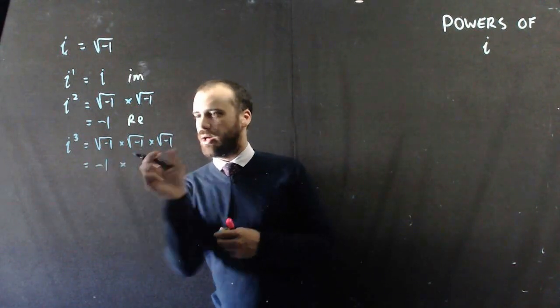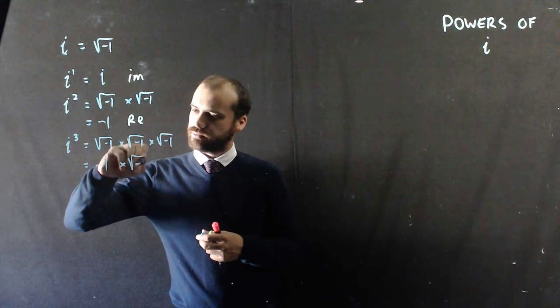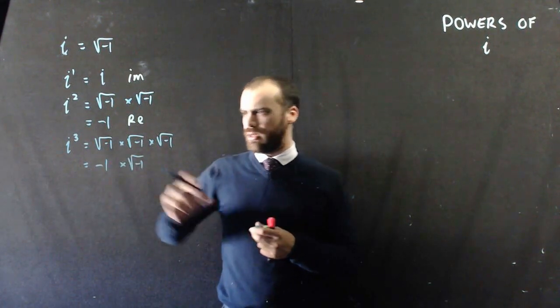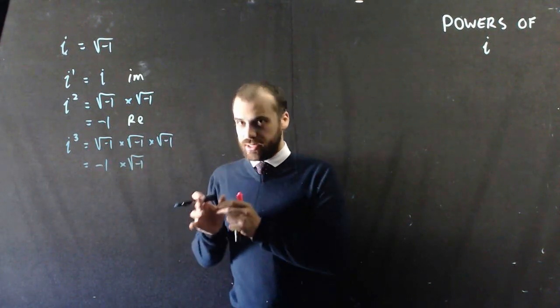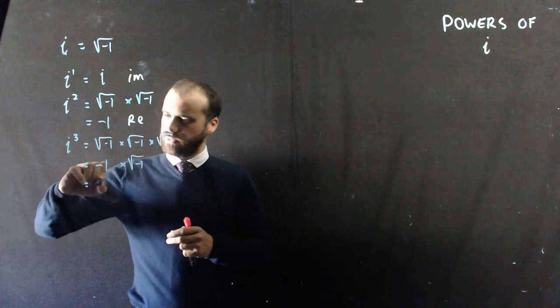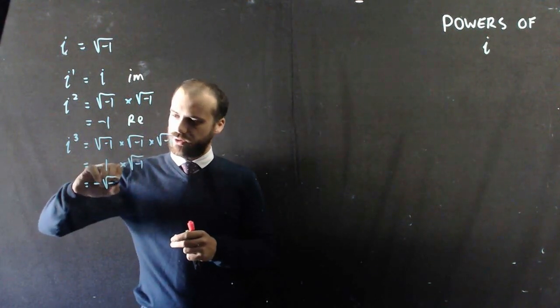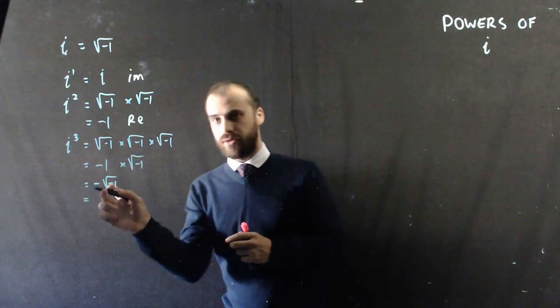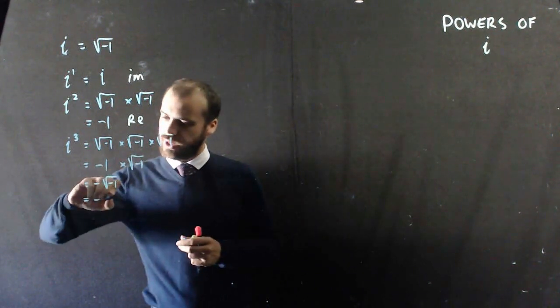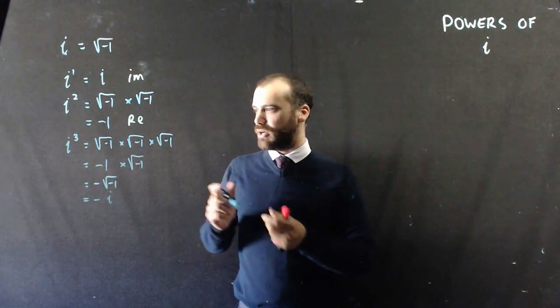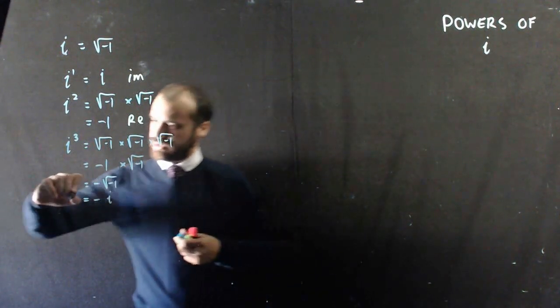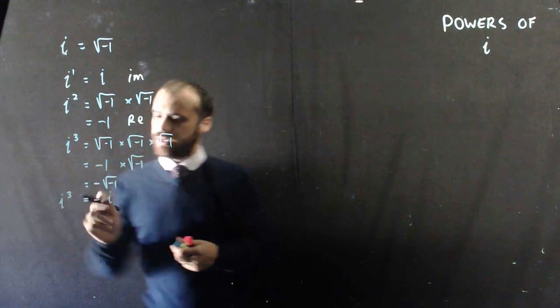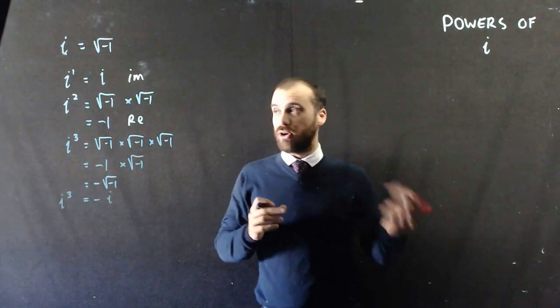And then I'm just going to multiply it by our last square root of negative 1. Now, to simplify this a little bit, that's negative the square root of negative 1, which is the square root of negative 1 is i. Negative i. All right, so, to just make that really clear, i to the power of 3 is negative i.